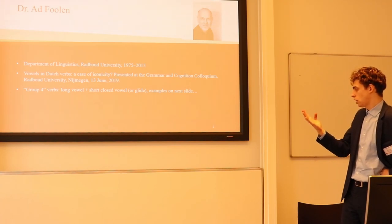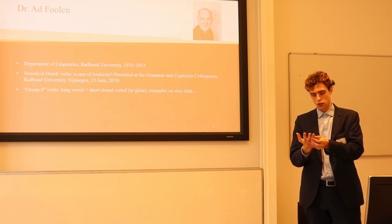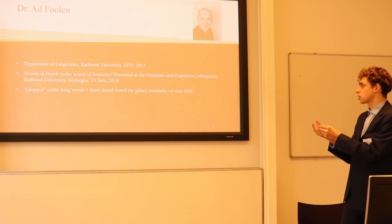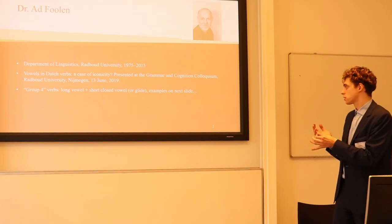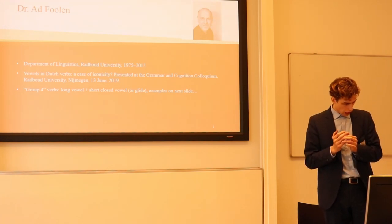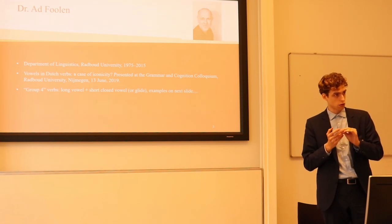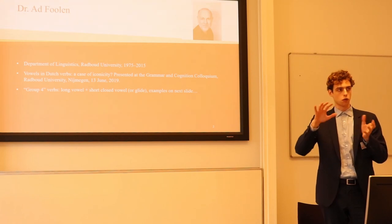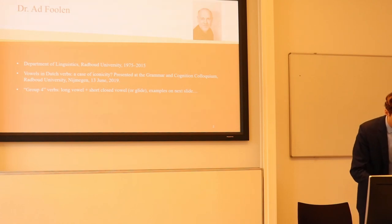Short vowels is one group, long vowels and diphthongs another, and then there's group four, which is a combination of a long vowel and a short closed vowel — so 'e' or 'u'. Some linguists also analyze it as a glide, but it doesn't matter. His idea was, if I formulated it correctly, that these vowels are iconic of some kind of curved or round movement.